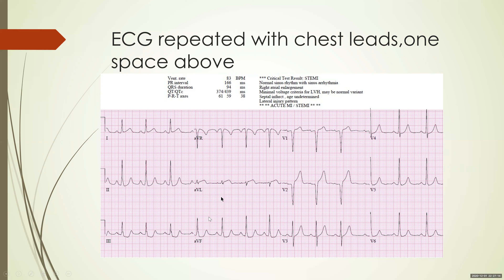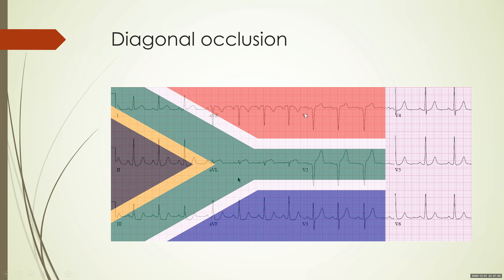Always, when you see localized ST depression, think of reciprocal territory ST elevation. Avoid terms like 'inferior wall ischemia' or 'anterior wall ischemia' on your ECG, because ischemia does not localize on ECG — neither ST depression nor T-wave inversions localize on ECG. This particular pattern is actually a diagonal artery occlusion, and this is called the South African Flag Sign. ST elevation in leads I, aVL, and V2 signifies that the occluded artery is a diagonal branch.